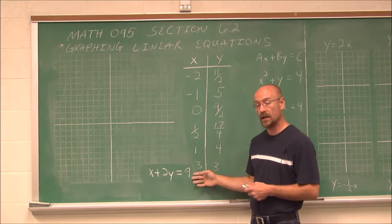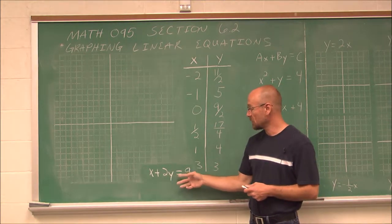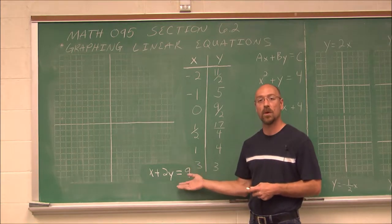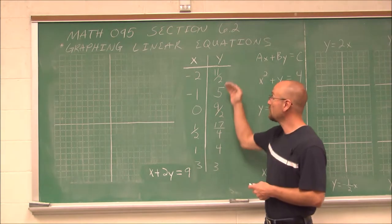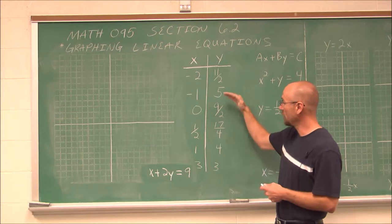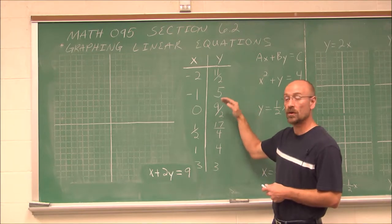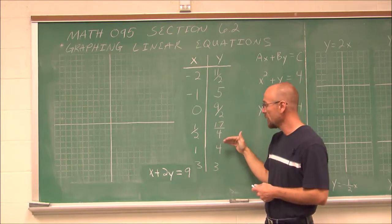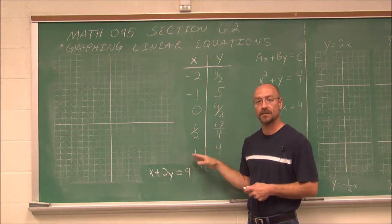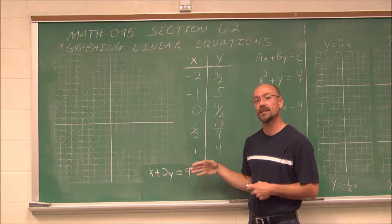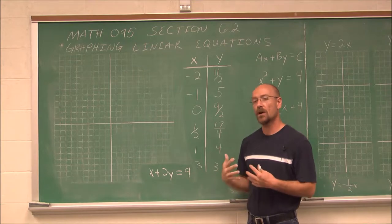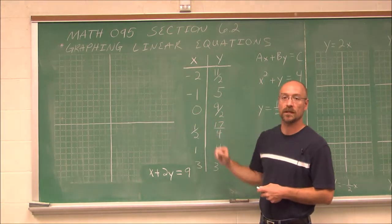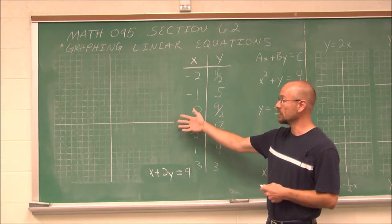And we worked with this line right here, x plus 2y equals 9. And if we recall, this had more than one solution. We built a t-table and found some ordered pairs. If x is negative 2, y is 11 halves, and so on. In fact, this equation actually has infinite solutions. So how do we represent infinite solutions? That's where we can apply a Cartesian coordinate graph.